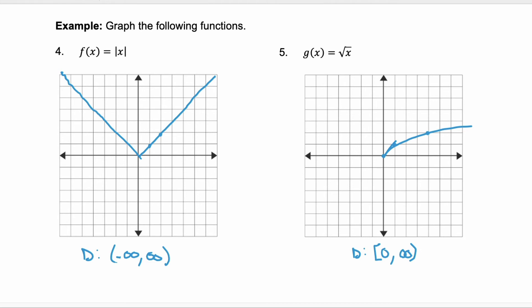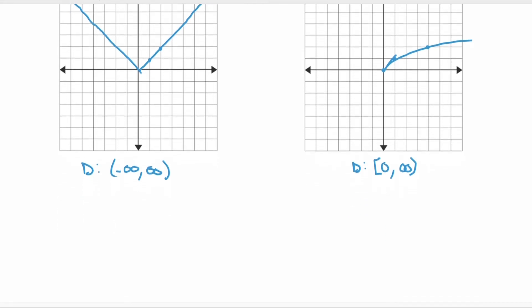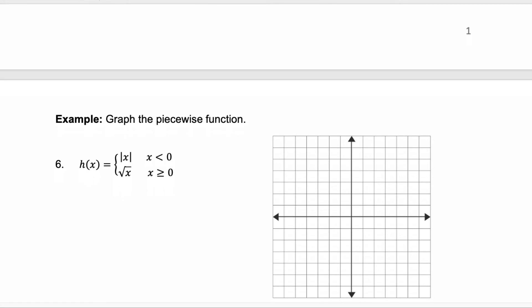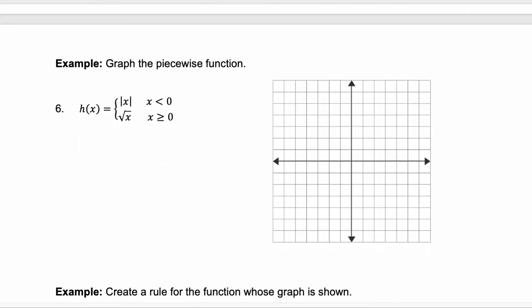Now let's look at making a piecewise function out of these two graphs. So remember their shape. Here's our piecewise function that we want. The two pieces are the absolute value of x and the square root of x. Notice our domain. Our domain for the absolute value are all values of x less than 0. So that is going to be everything to the left of the y-axis.